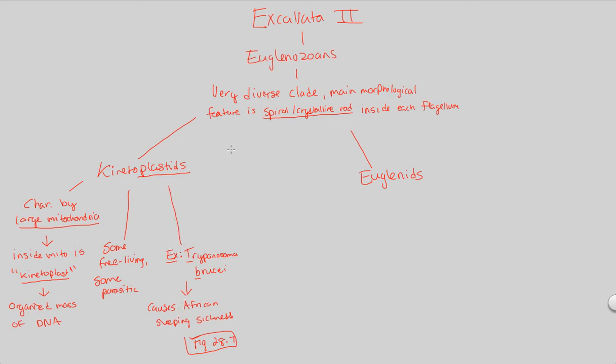So that's our kinetoplastid story. Let's remember kinetoplastids are a type of euglenozoan. Euglenozoans are a type of excavata. Excavata are a type of protist, and protists are a type of eukaryote. Good. So we have a good stepwise structure that we just went through.